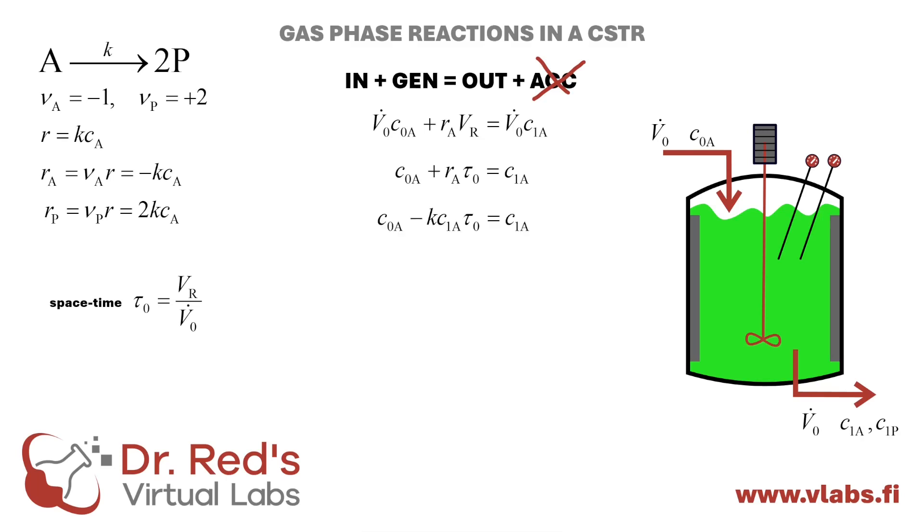Upon inserting the rate of formation into our equation, C1A becomes the only unknown. This allows for a straightforward calculation of the exit concentration of the reactant A, and by applying the reaction's stoichiometry, the exit concentration of the product, P.